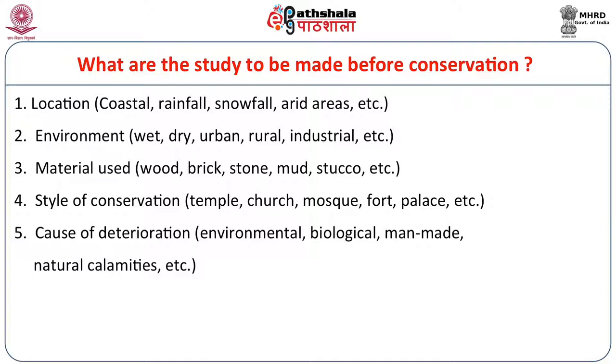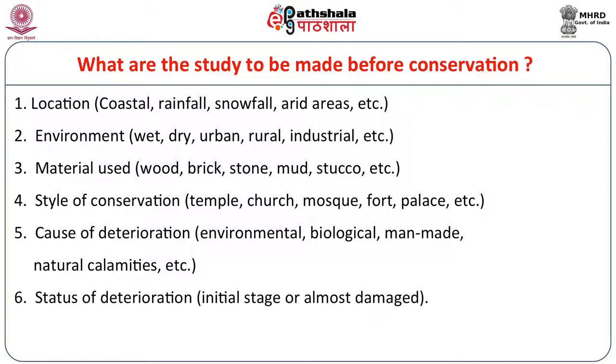The cause of deterioration is important — there are many causes for deterioration of an ancient monument, mainly environmental causes, biological causes, man-made causes, natural calamities, and many others. We also have to see the status of deterioration: whether it is at an initial stage or almost at the damaging stage, whether it can be conserved or preserved. We decide on the basis of parameters: location, environment, materials used, style of construction, cause of deterioration, and status of deterioration.